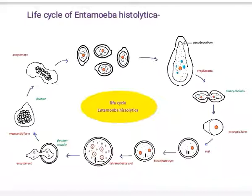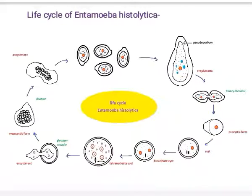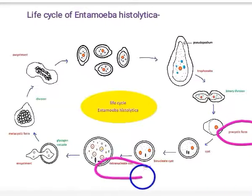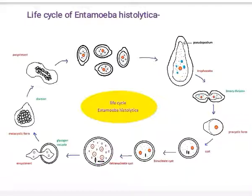The trophozoite form undergoes multiplication by repeated binary fission in the intestinal wall of the host. After binary fission, the precyst is formed — it is a smaller, spherical, and non-phagocytic stage of Entamoeba histolytica that inhabits the lumen of the intestine. This precystic form then undergoes encystment, which helps in the transmission of the parasite. Encystment is the process of formation of a cyst from the precystic form.